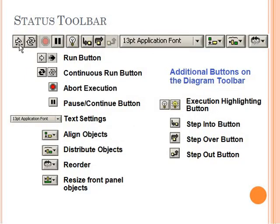The status toolbar buttons have these functions: we have a run button, and the run continuous button. If you want to continuously run our program in an infinite loop, we can use this button. It will run again and again, and to abort that execution we have the abort execution button. We can pause and continue. Similarly, we have text settings to align objects, distribute, reorder, or resize the front panel. We have step into button, which steps one by one into the program. If you want to skip over any step, we have step over button. If we have to come out of a loop, we have step out button.